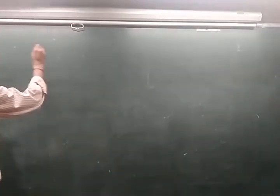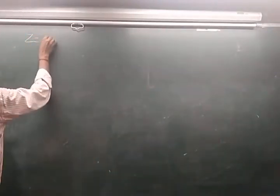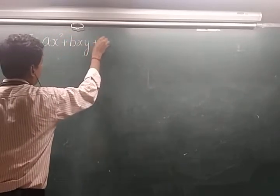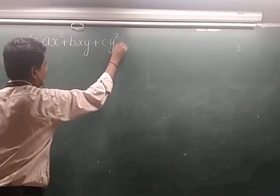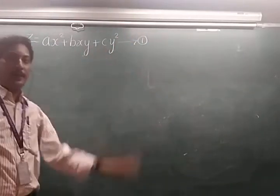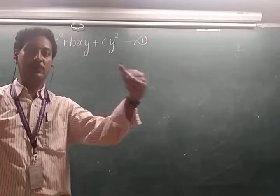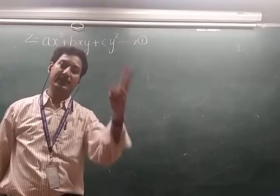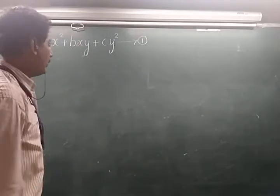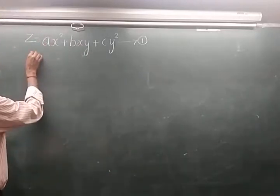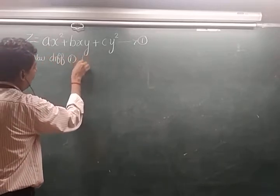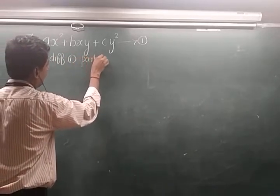Let us consider z = ax² + bxy + cy². This is equation number 1. Here a, b, and c are arbitrary constants — three in number, which is more than two independent variables. So we will get a second or higher-order PDE. Let us eliminate a, b, c by differentiating with respect to x and y.